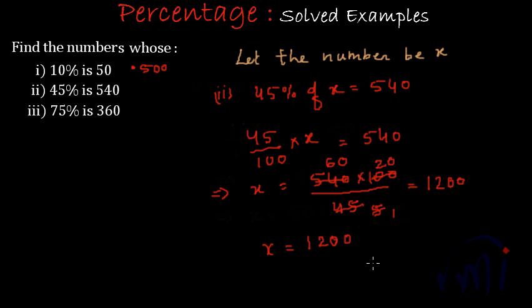That means 45% of 1200 is equal to 540. Let's find it out. So 45% of 1200 will be 1200 multiplied by 45 by 100.